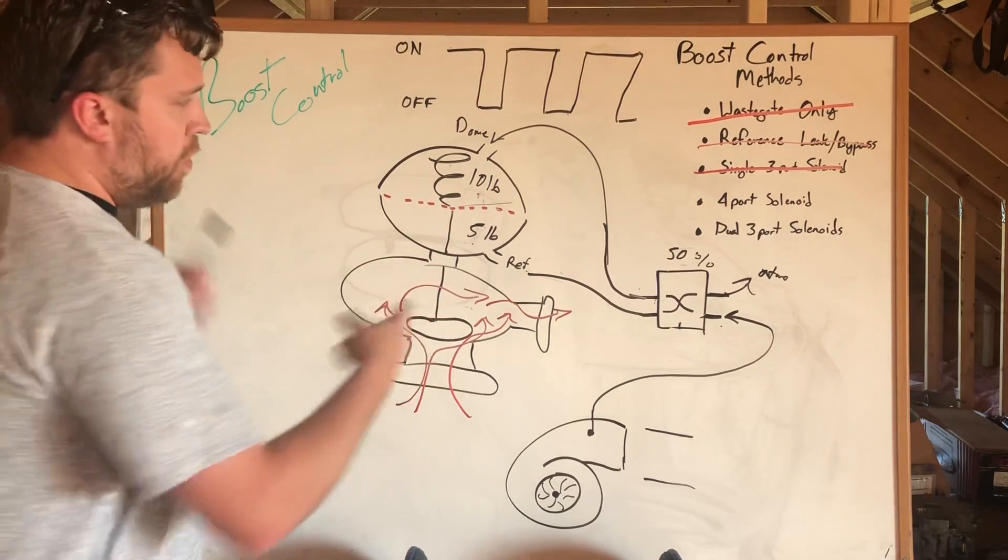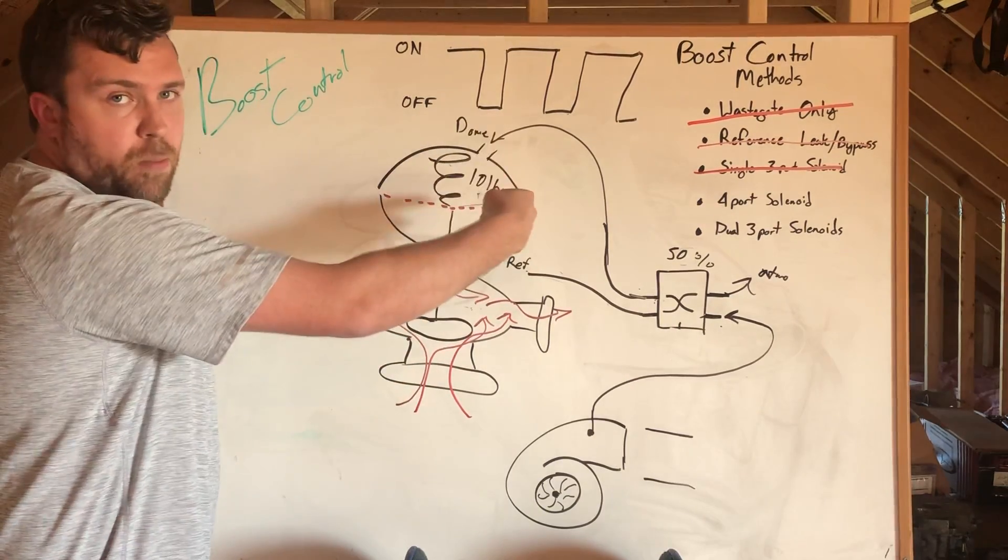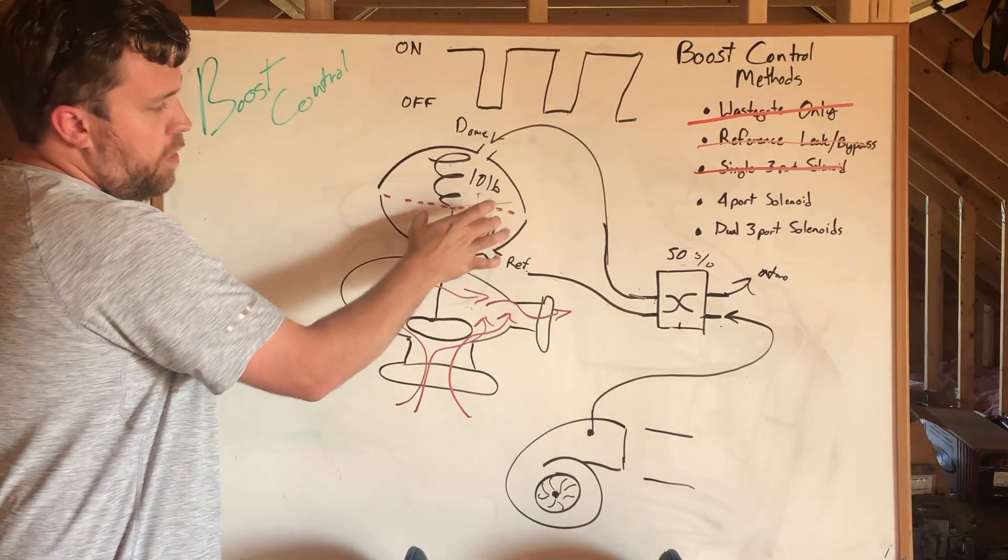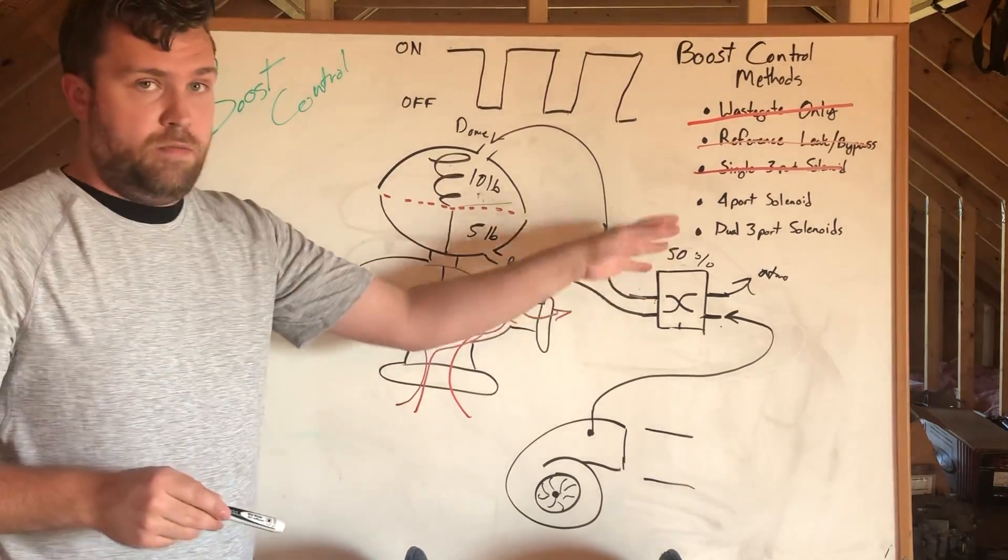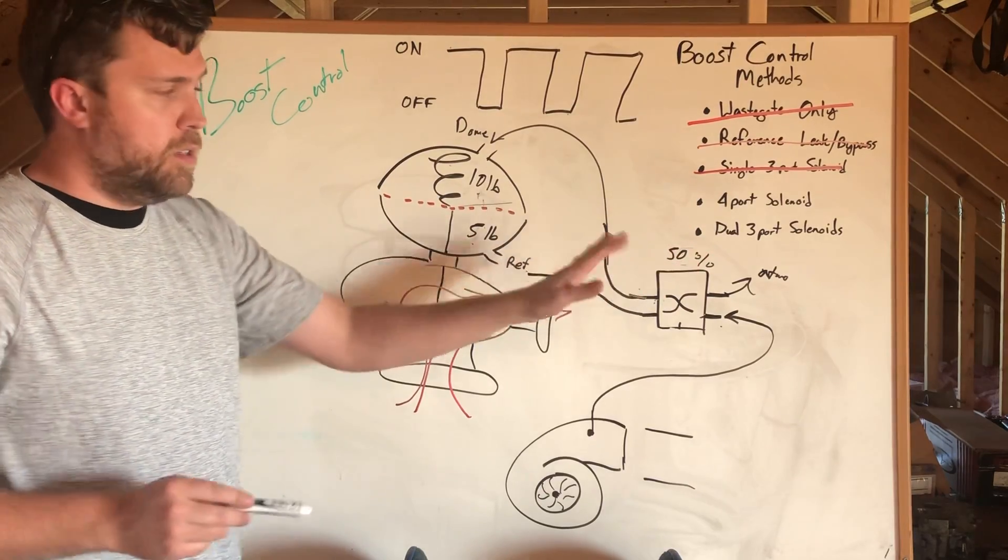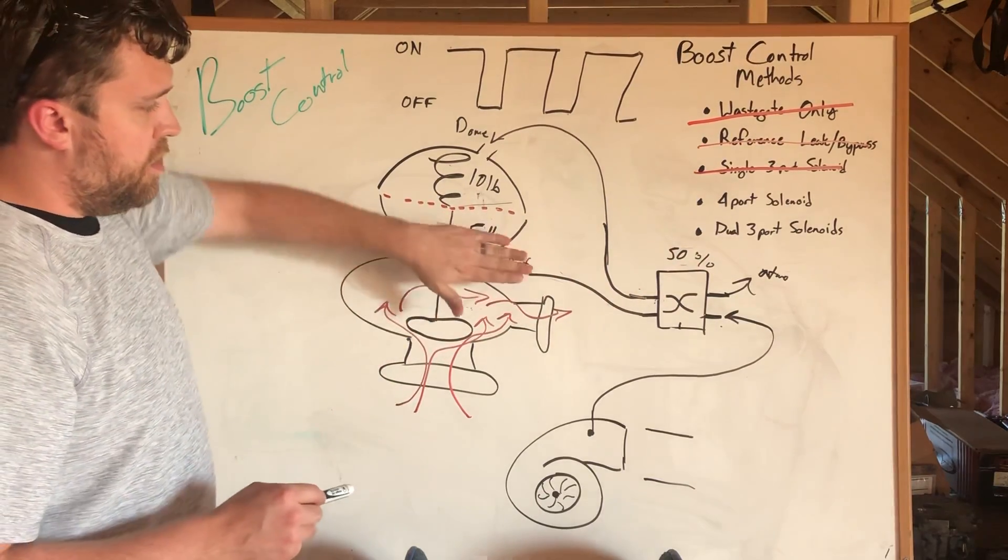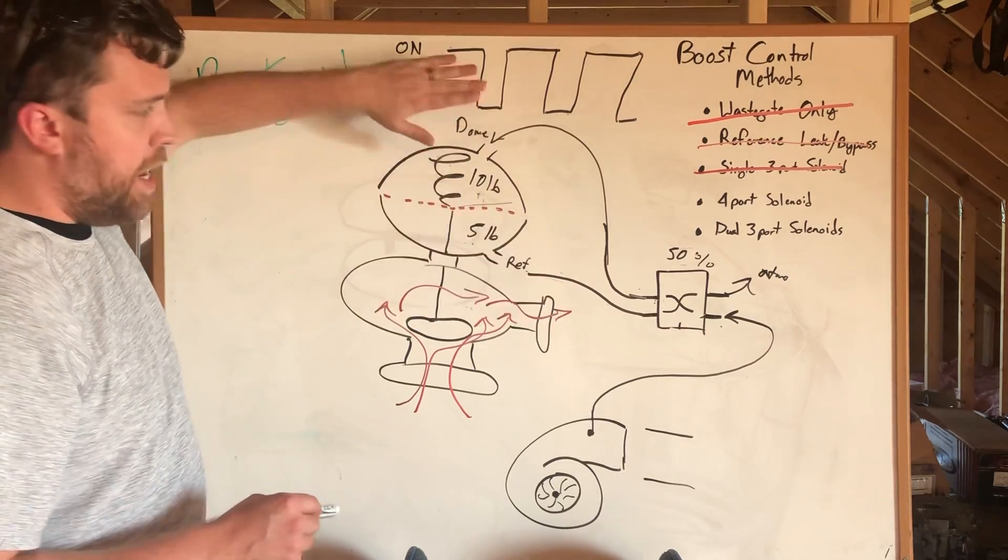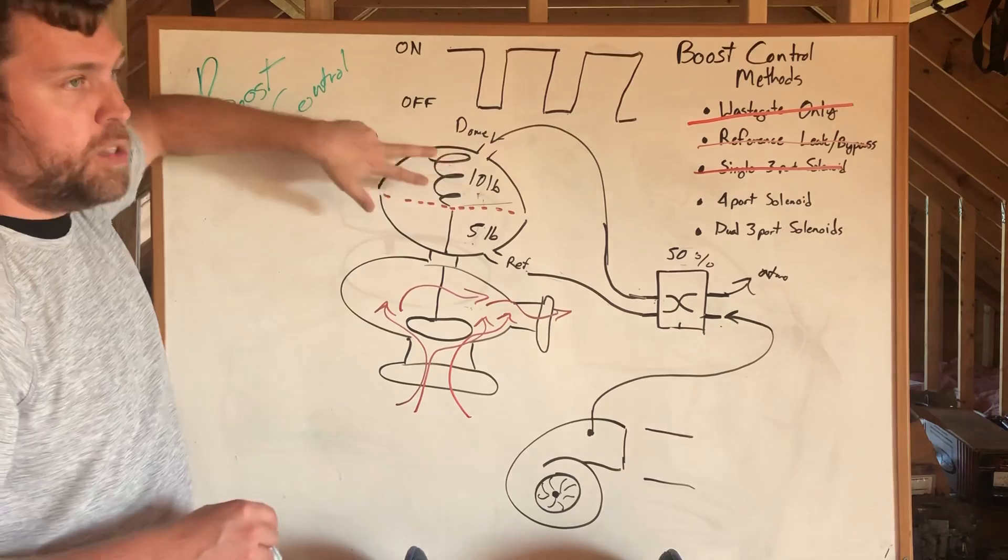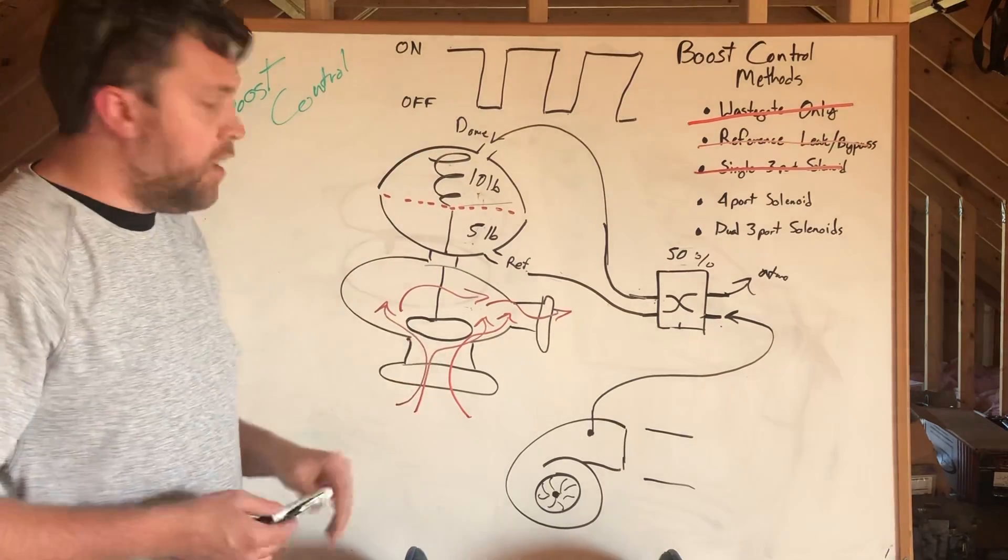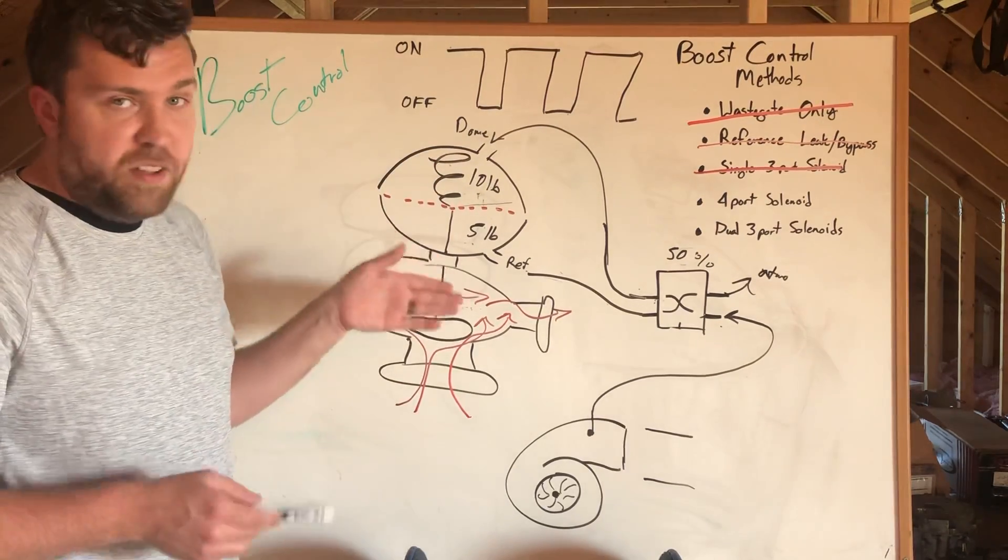It literally inverts your pressures from the reference side to the dome side. 100% duty cycle on a four-port—let's make this clear—is completely shutting the reference off and adding all of the boost that's coming out of the turbo to the dome, plus your spring. It holds the wastegate shut, and all you get is all the turbo.